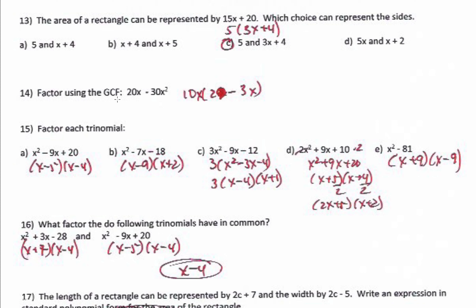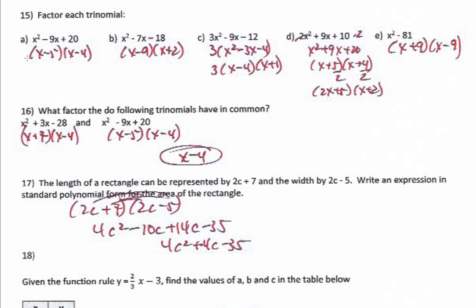Factoring using the greatest common factor: they share a 10 and an x in common, so I pull out 10x and I'm left with 2 minus 3x. Always check yourself by multiplying back — 10x times 2 is 20x, 10x times negative 3x is negative 30x squared. Make sure you pull out the greatest common factor, which is 10x, not just a 10, 5, 2, 5x, or 2x.